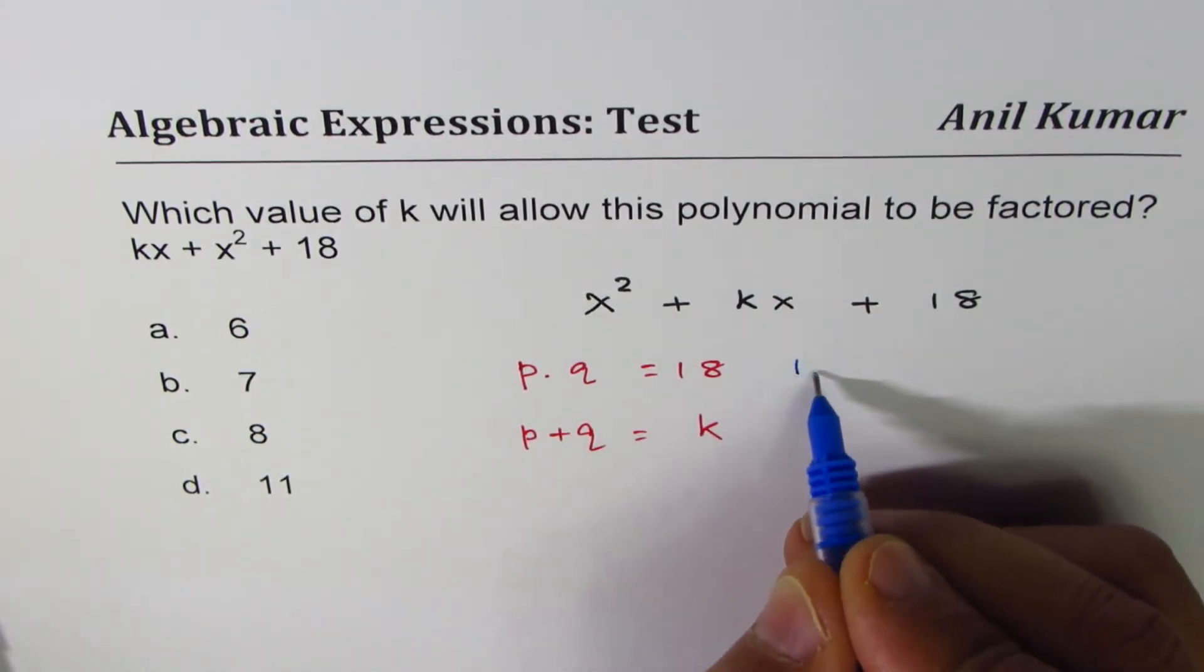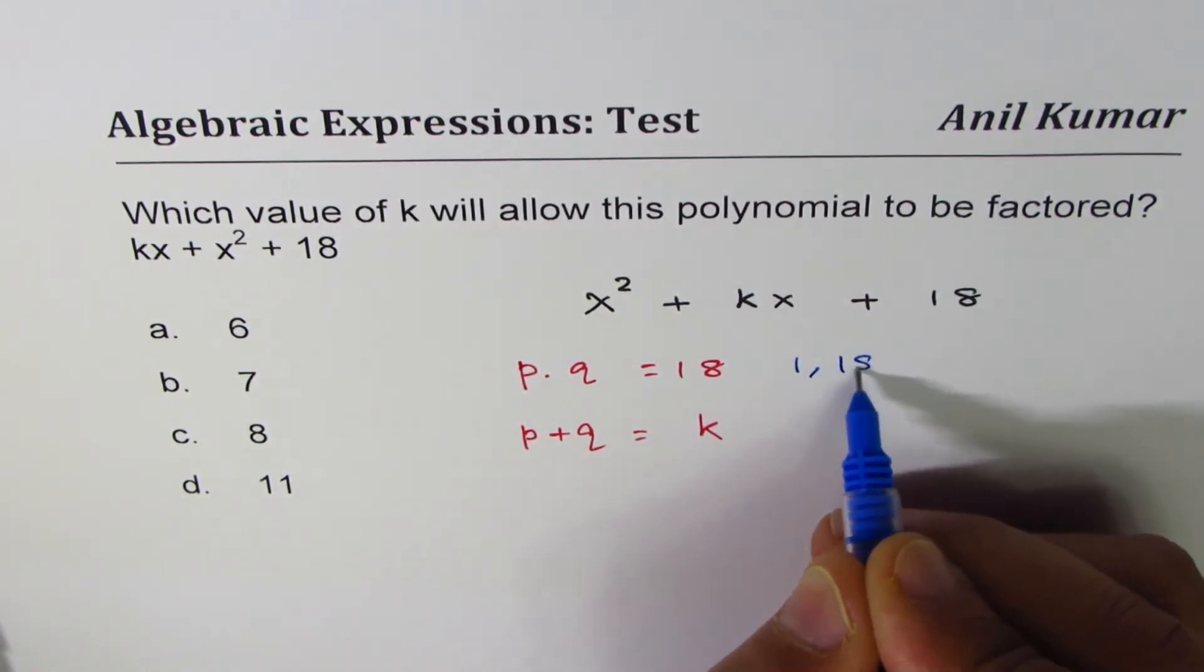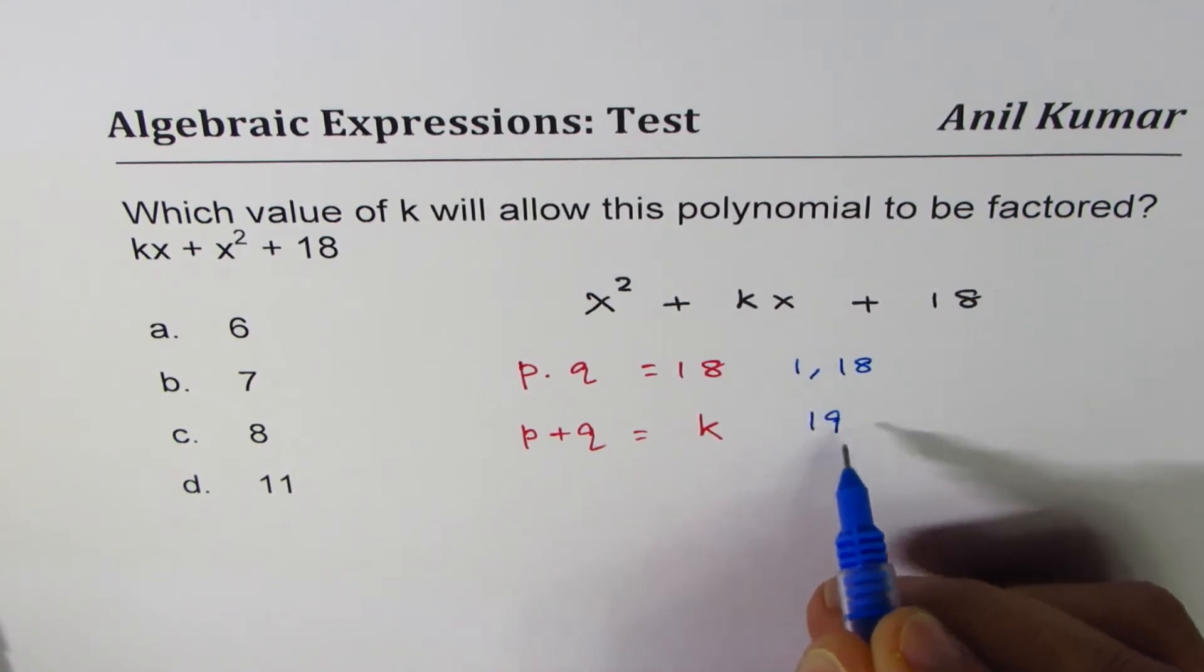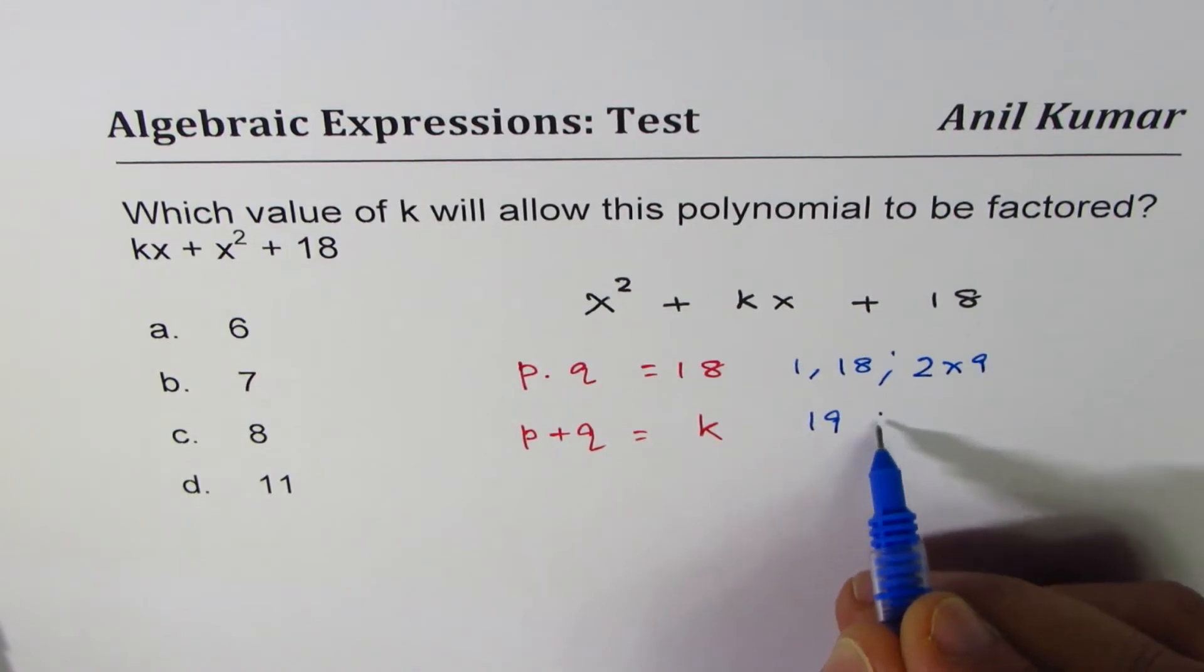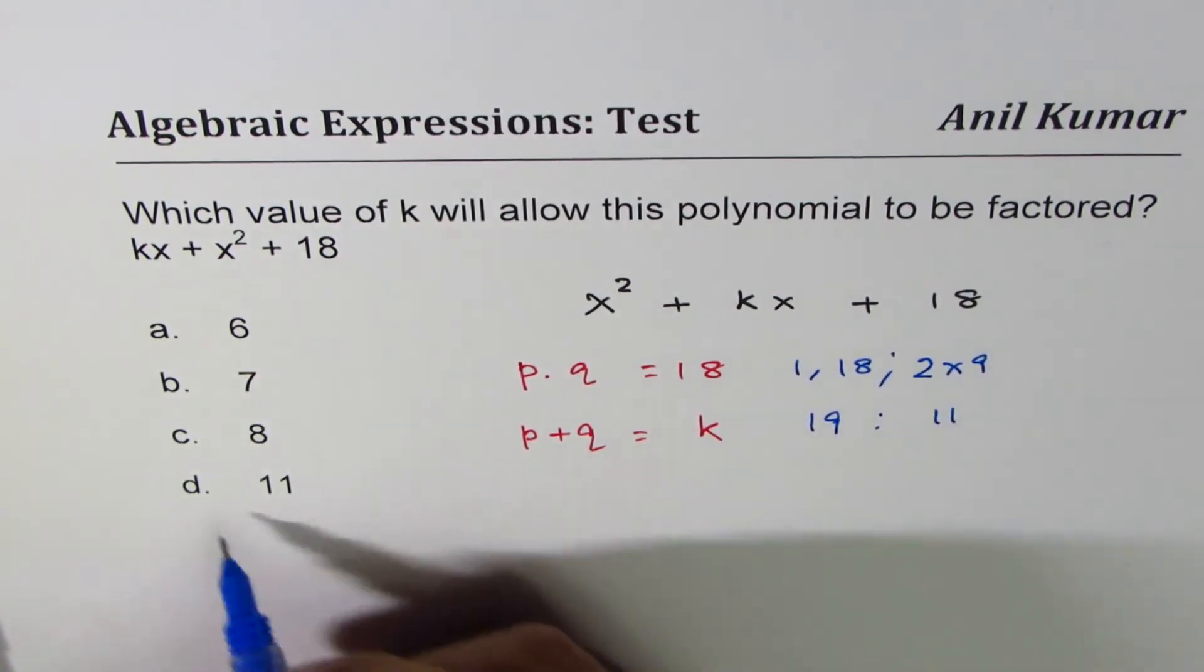So we could get 1 times 18, and then k could be 19. For example, is it okay? We could get 2 times 9, and that gives us when you add 11, which is there.